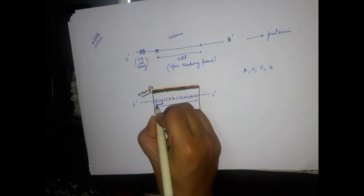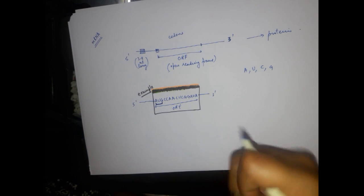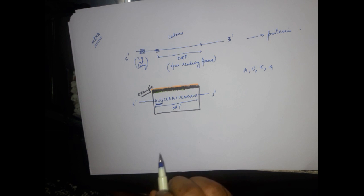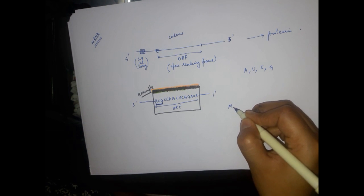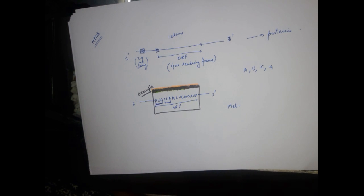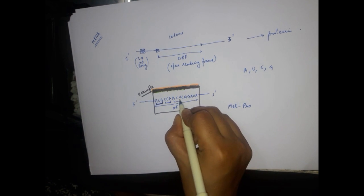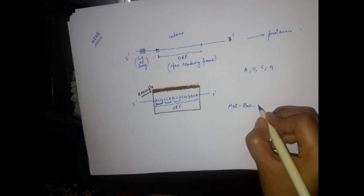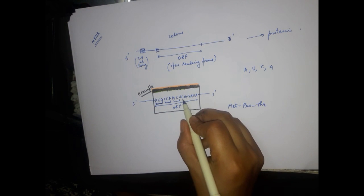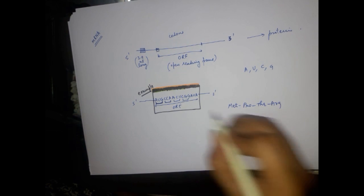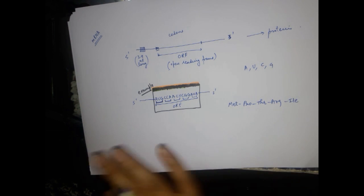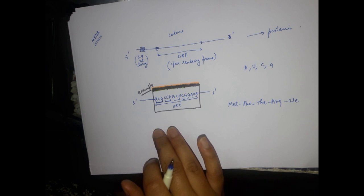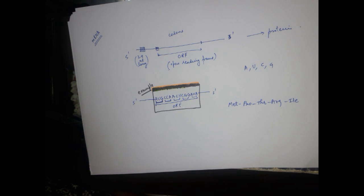The first codon will be AUG, which is read by tRNA. AUG codes for methionine, so the first amino acid in the growing polypeptide will be methionine. The next codon CCA codes for proline, followed by ACU which codes for threonine, then CGG which codes for arginine, and AUA which codes for isoleucine. This hypothetical example shows how a protein is made from the particular sequence of an ORF.